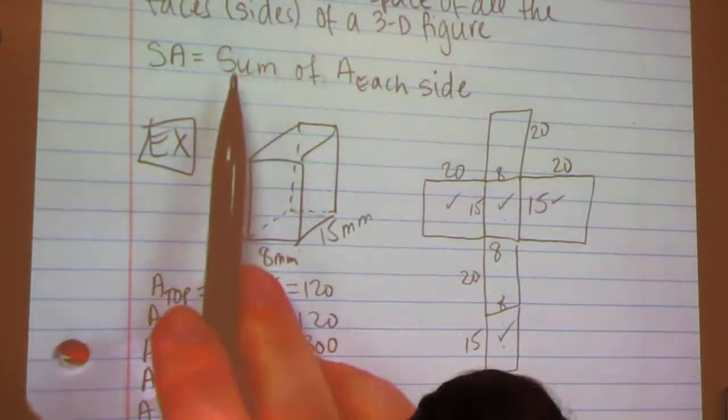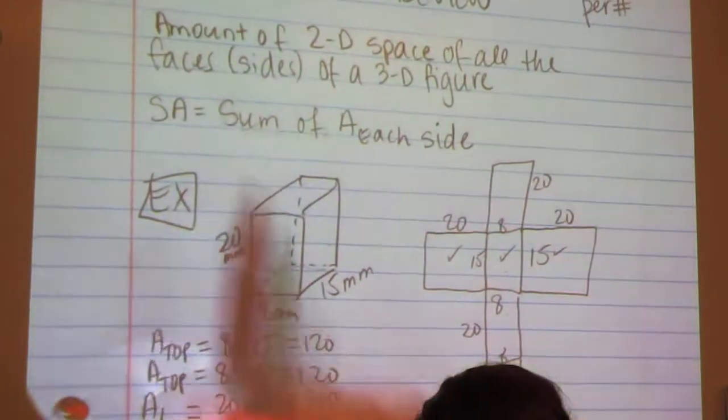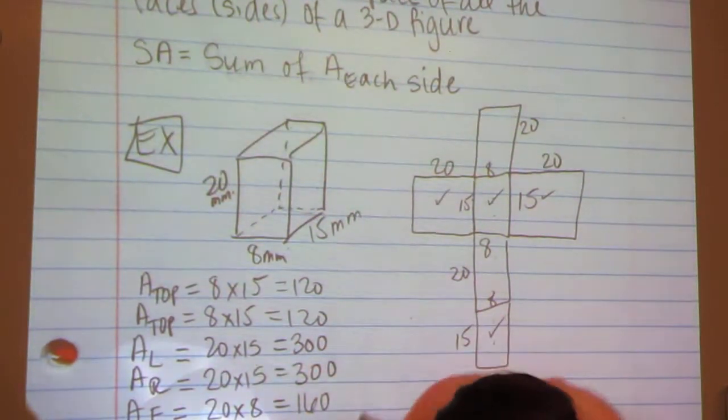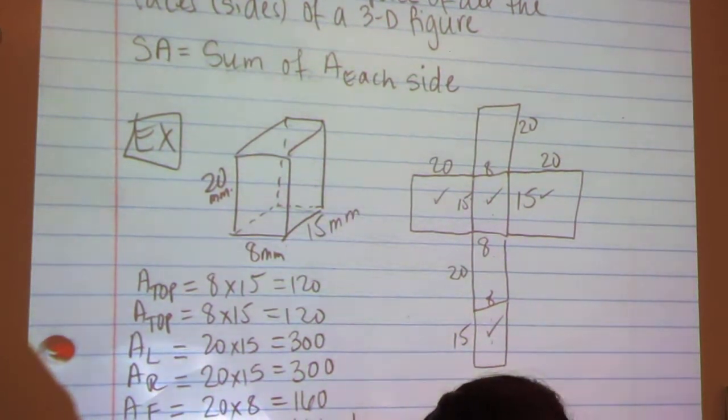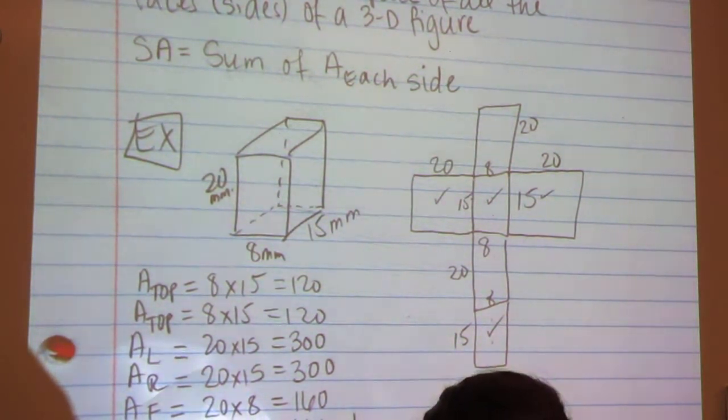Then I know that I want the sum of the area of each side, so I add these. And I get 1,160 square millimeters.